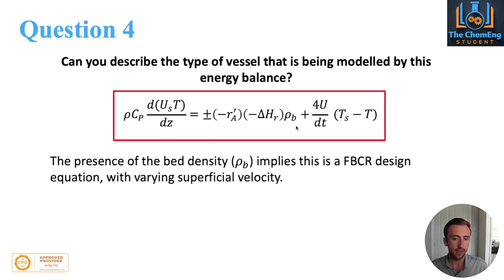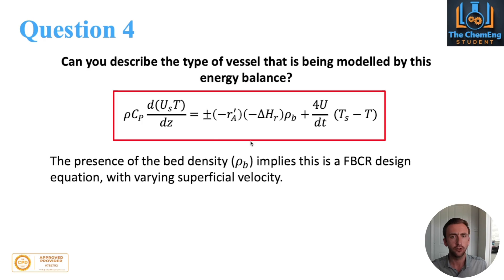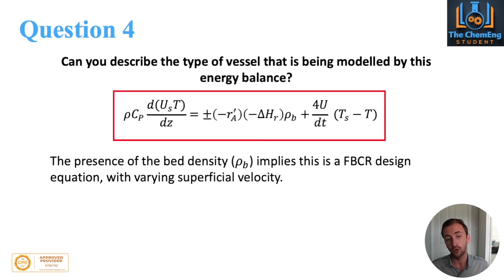The clue here lies in the presence of the bed density. The bed density only comes into play when you have a fixed bed catalytic reactor. So this equation is modelling a fixed bed catalytic reactor with a varying superficial velocity. That superficial velocity, sometimes written as vs, is inside the differential, meaning we have varying temperatures and varying velocities with respect to the reactor length.